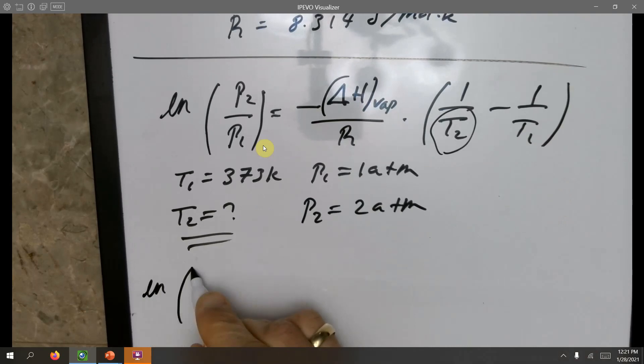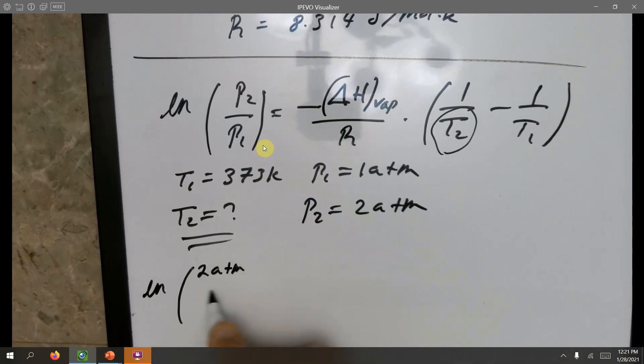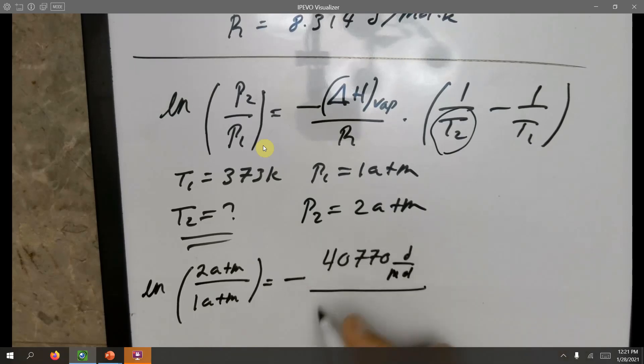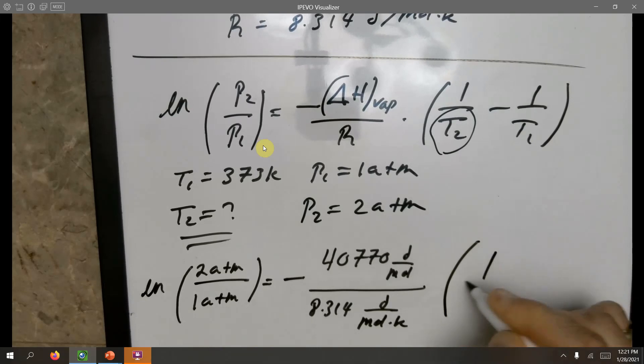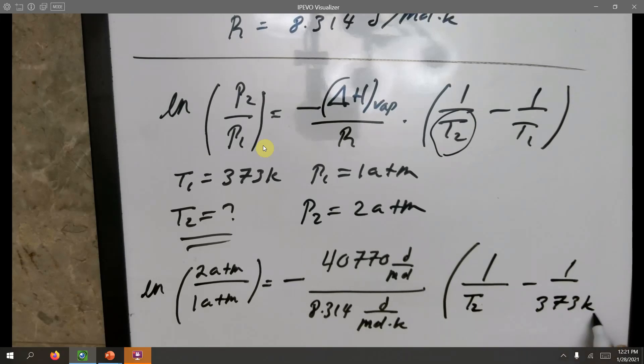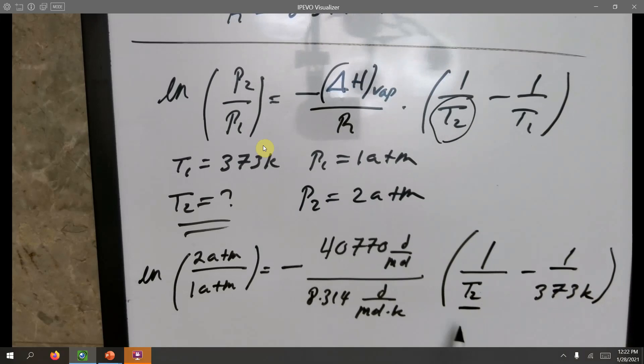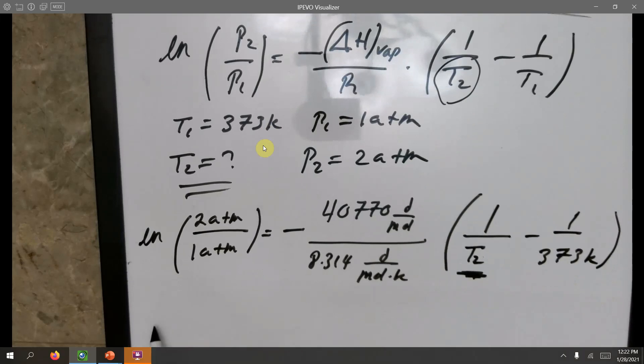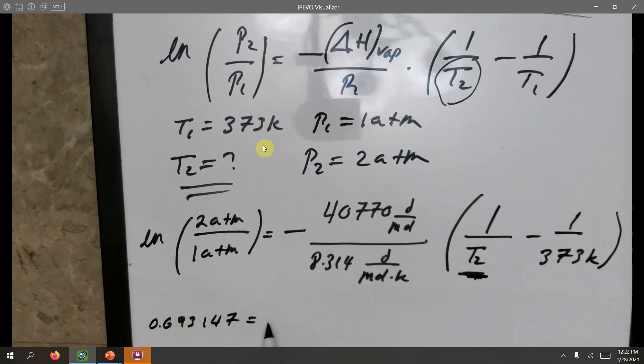So it's going to be LN of 2 ATM divided by 1 ATM equals to negative 40770 joules per mole divided by 8.314, or joule per mole kelvin. 1 over T2 is what we're looking for and 1 over T1, that's 373k. So now we just have to solve. We have one equation, one unknown. We've got to solve for T2. That's what we want. How do we do that? So I'll plug this into the calculator. I'll do it slowly with you. This here becomes 0.693147. This is negative 4903.77676.